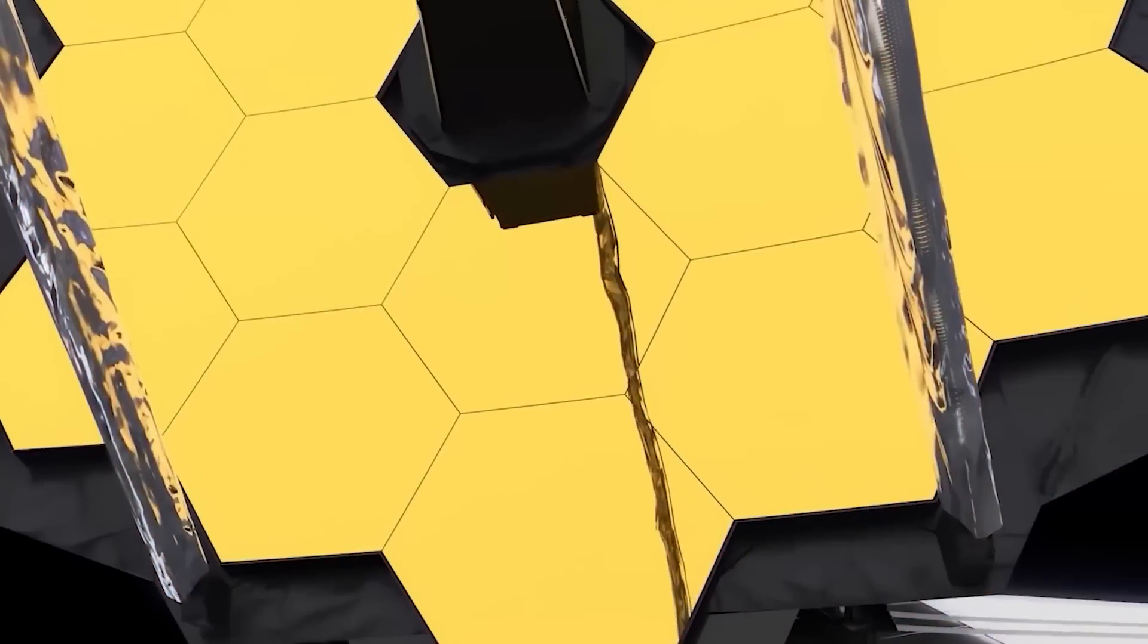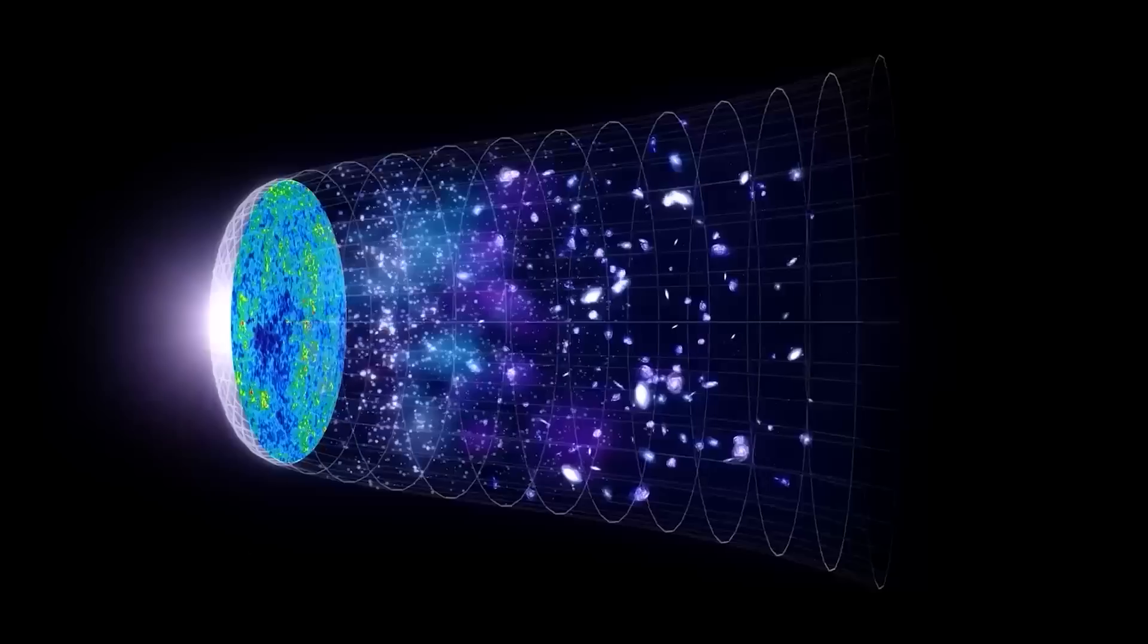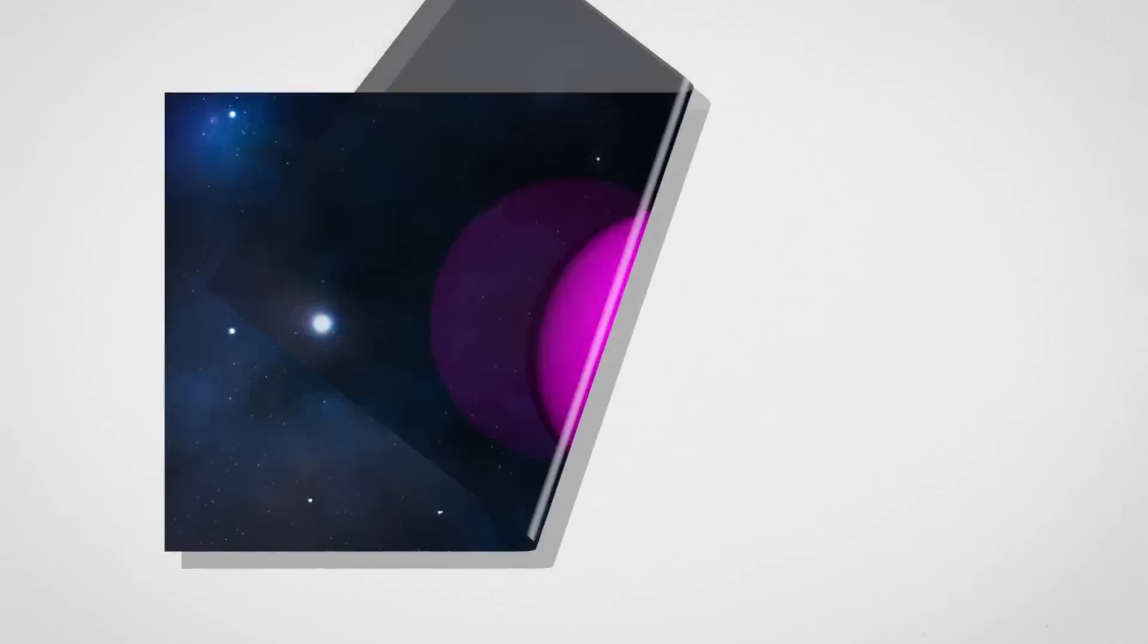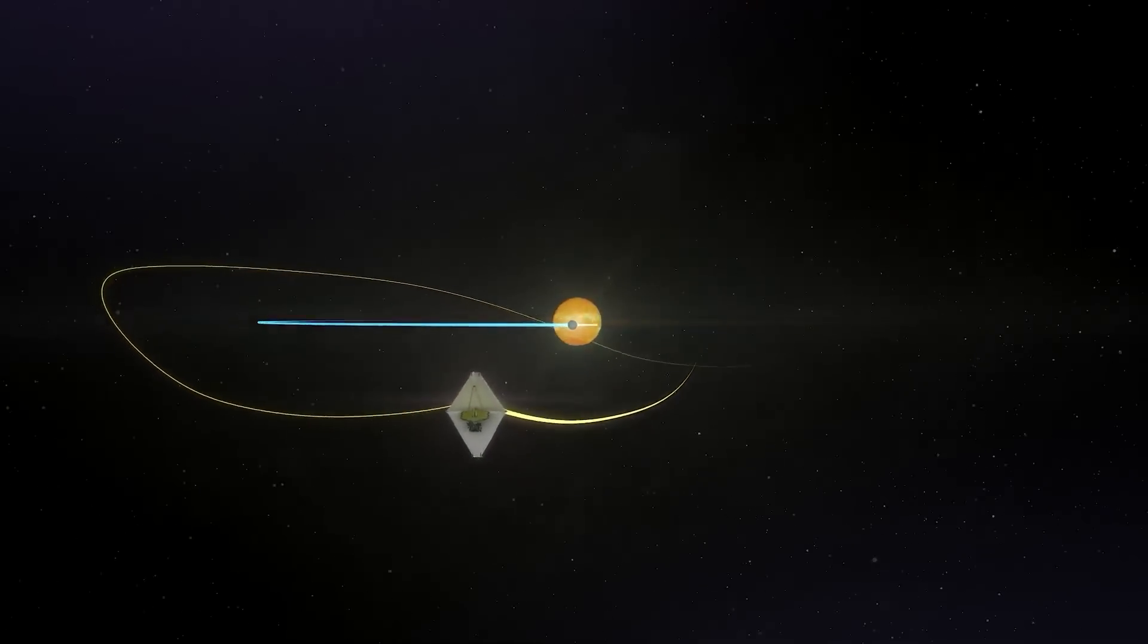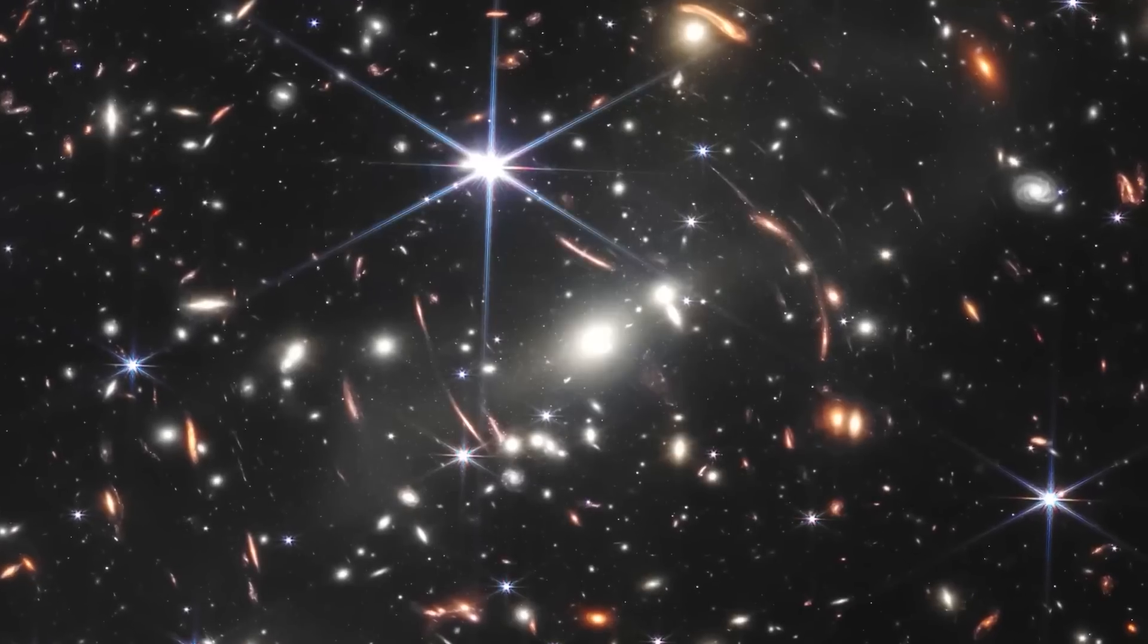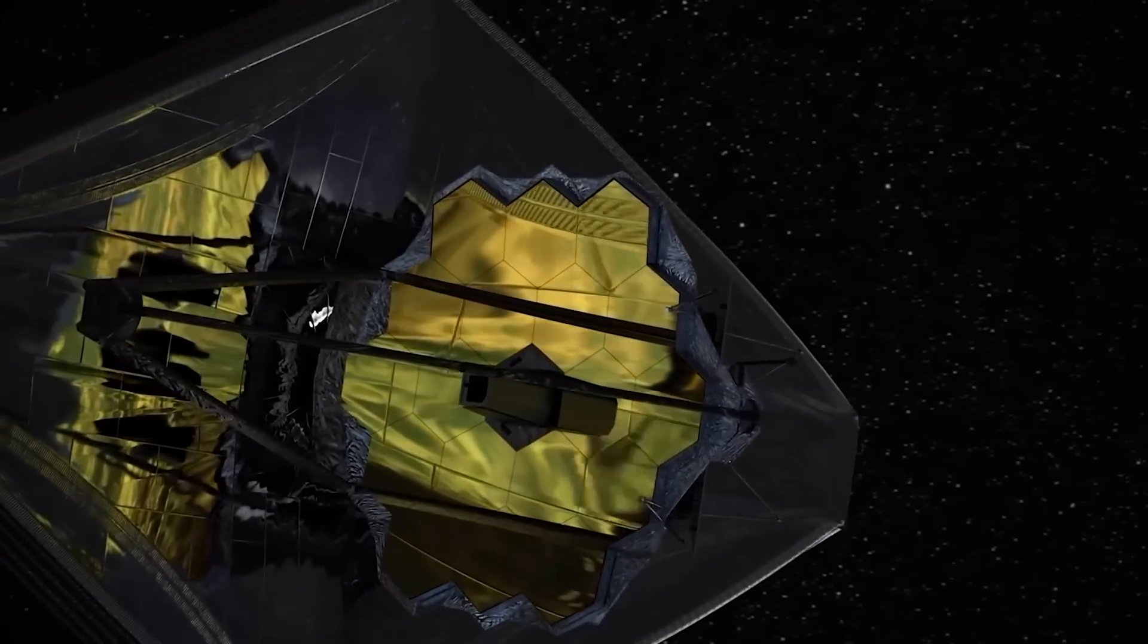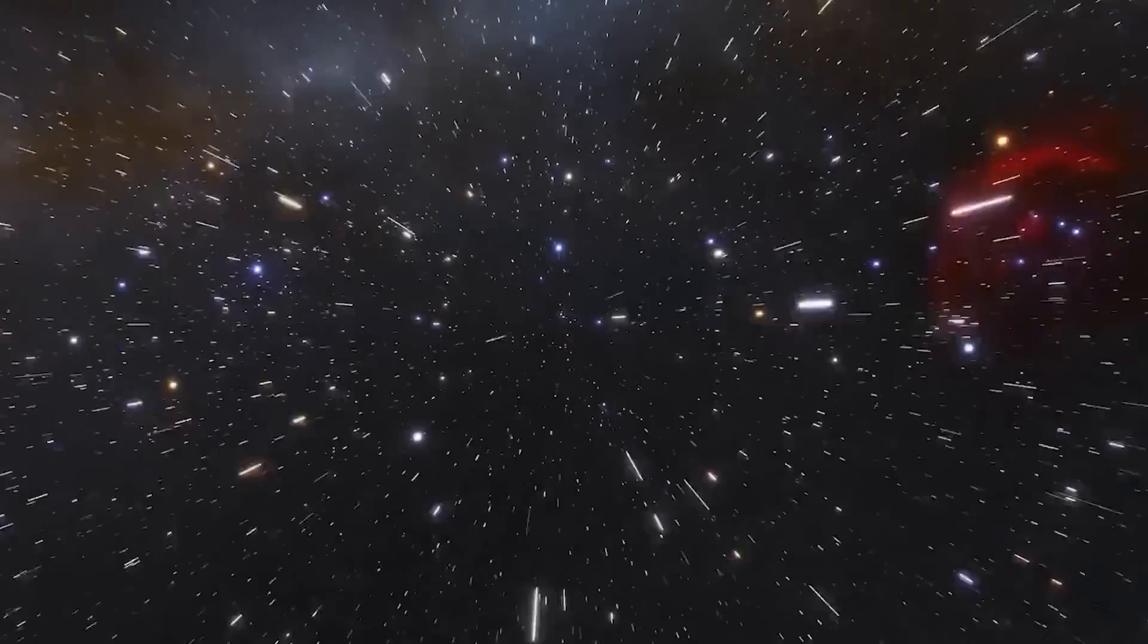The James Webb Telescope has just delivered a groundbreaking image of Gliese 504b, a planet that defies everything we thought we knew about the universe. Gliese 504b's mysterious pink hue is unlike anything we've ever seen, and it might hold secrets that could rewrite planetary science. Tune in as we unravel the breathtaking mysteries hiding in the swirling pink clouds.